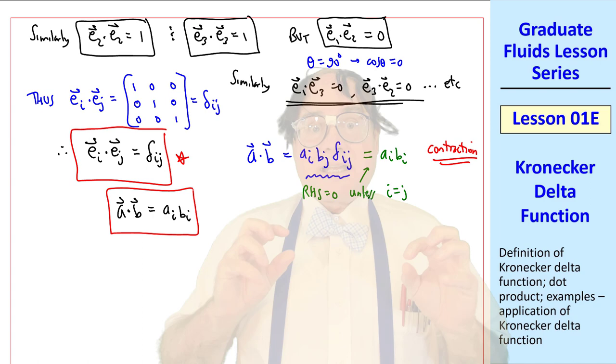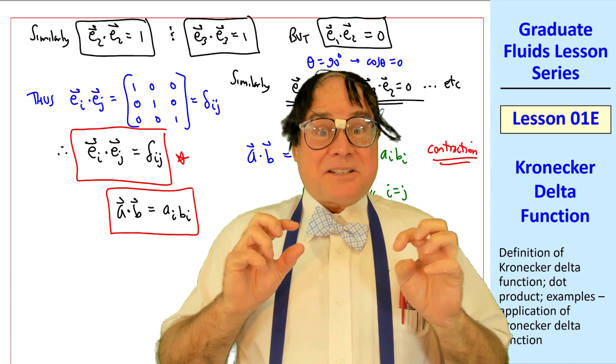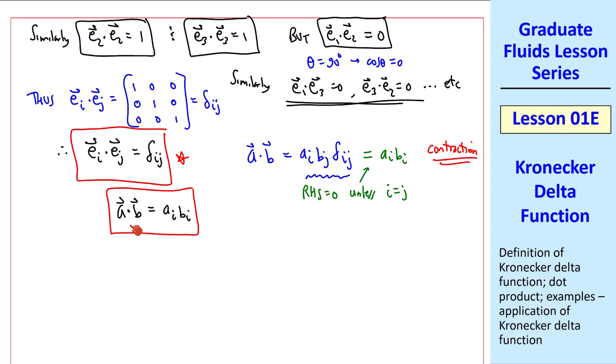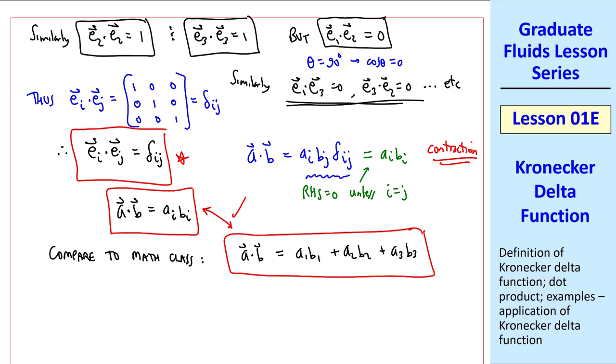But sir, I'm nervous because you're mixing tensor notation and vector notation, aren't you, sir? Good observation, Ned. Yes, I realize I'm mixing vector and tensor notation, but this is okay in this case, because both of these sides are scalars. Let's compare this to what we learned in math class. You should recall that a dot b is a 1 b 1 plus a 2 b 2 plus a 3 b 3. In tensor notation, that's exactly what you get when you expand this. It's kind of like learning a new language. From now on, when you see a i b i, in your head you should be thinking that's a dot product.